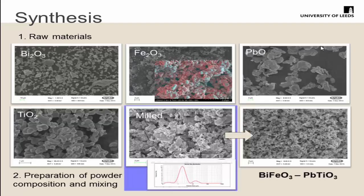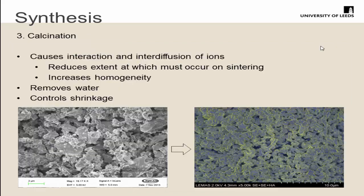We take the raw materials of a range of sizes and then mill them. We have a range of milling techniques at Leeds: ball milling, planetary mills, or attrition milling. The attrition milling gives us a nice small distribution of particle size, and we get a uniform-sized powder at the end. We then take that powder through calcination, which causes interaction and interdiffusion of ions — we're partially reacting the material. It gives good homogeneity and reduces shrinkage, giving a quite reproducible material, which is important for metrology.